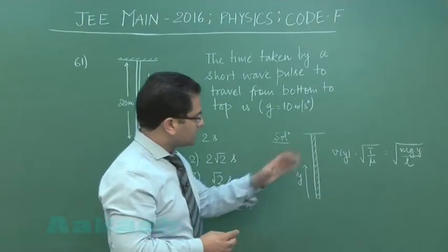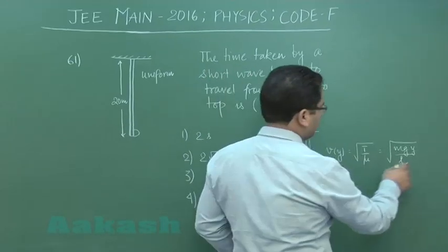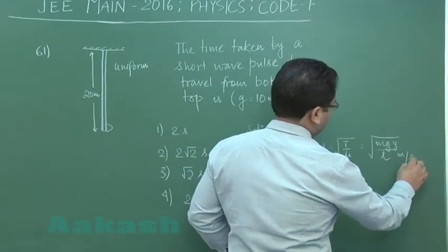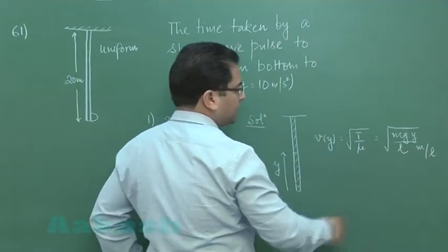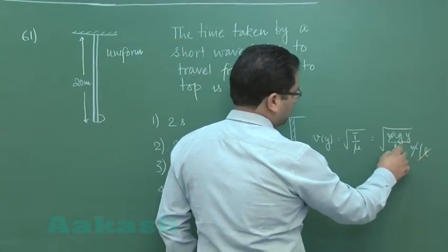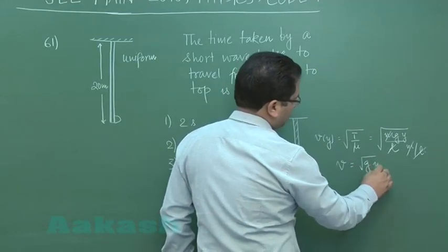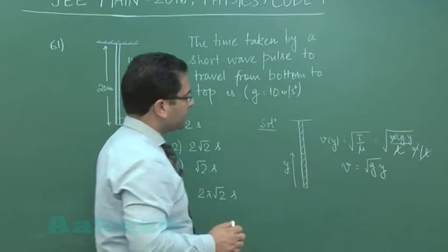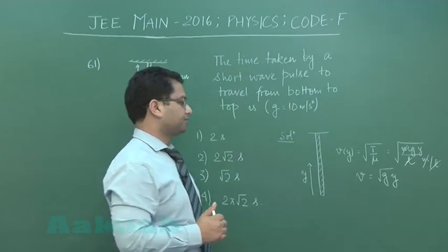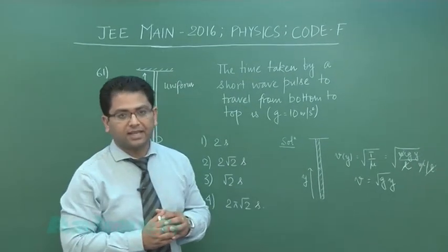Since it's uniform, you can easily find that mu is mass per unit length. So here you see, on all those cancellations, we get velocity at any distance y is root of gy. It is clearly indicating that the velocity is variable.